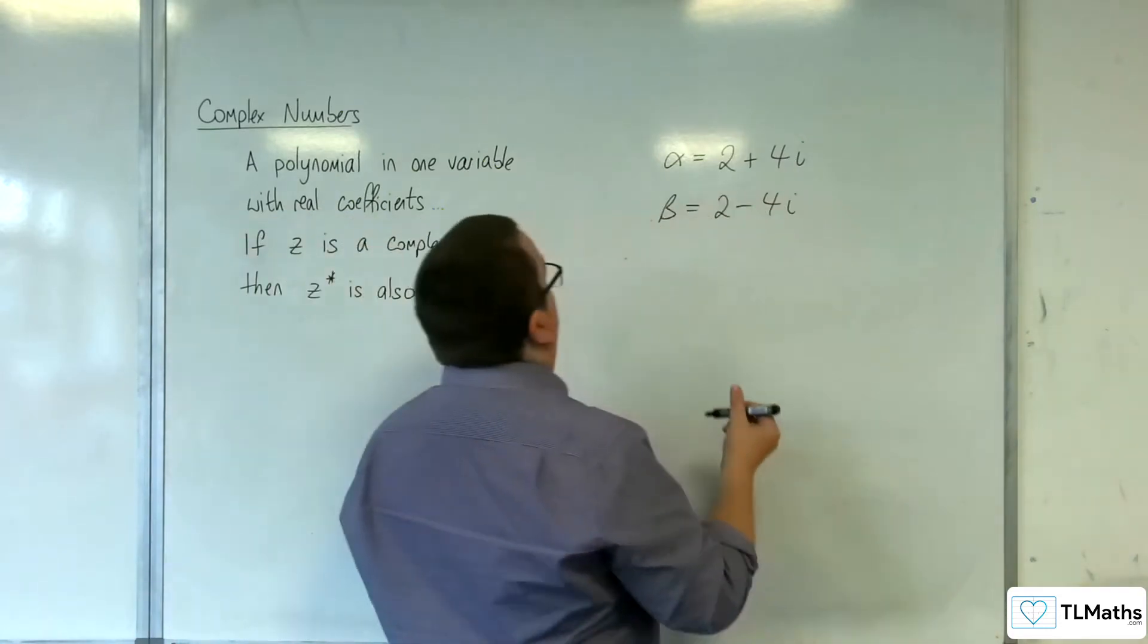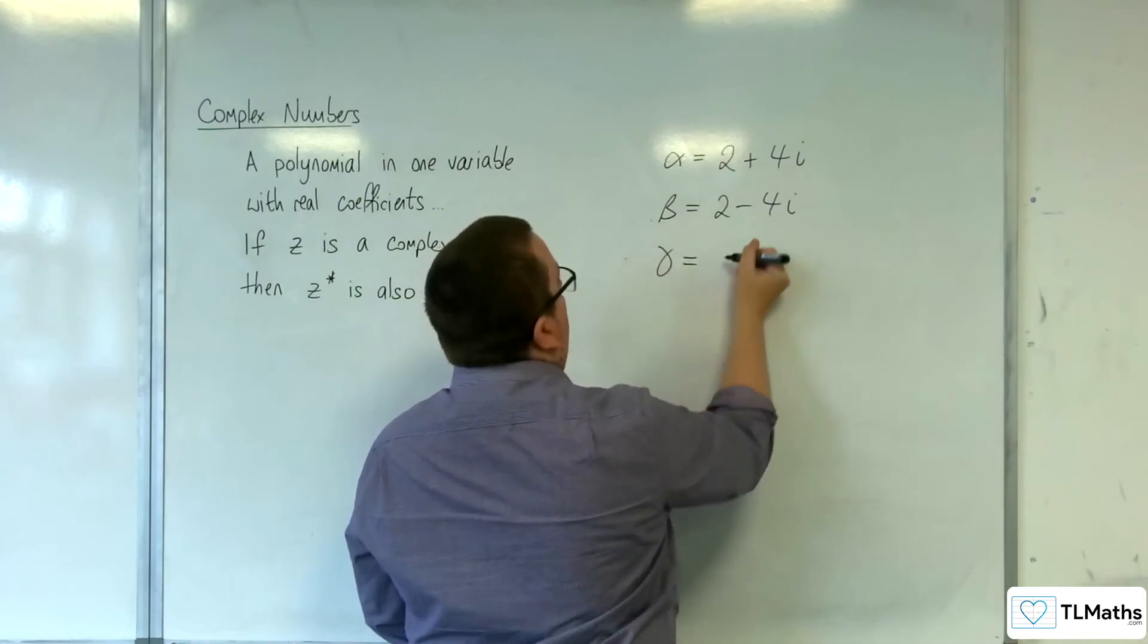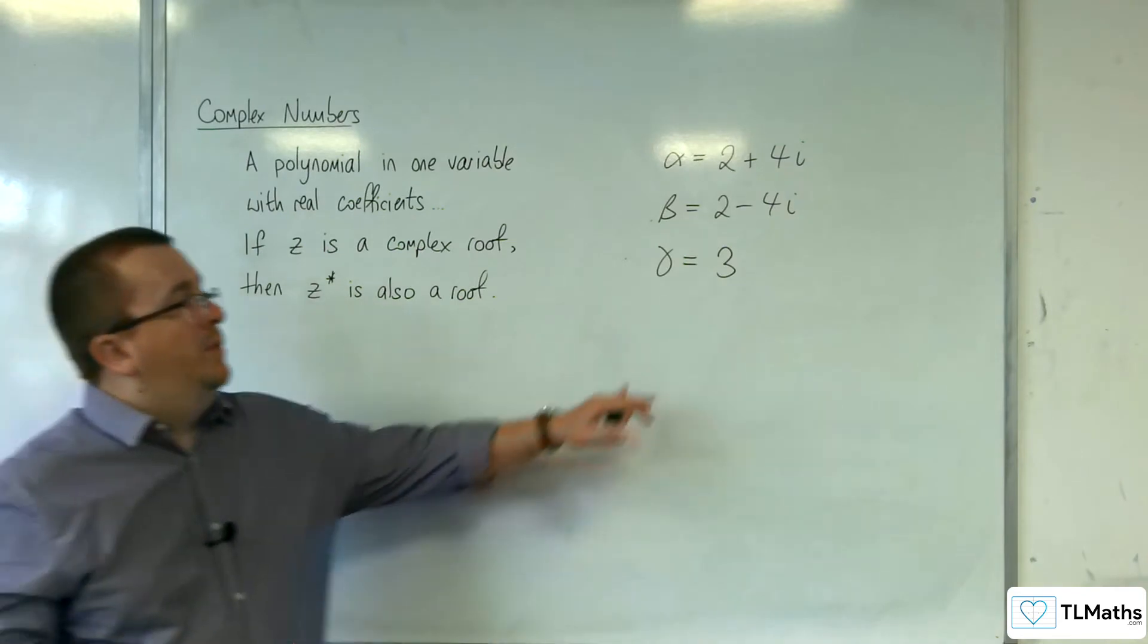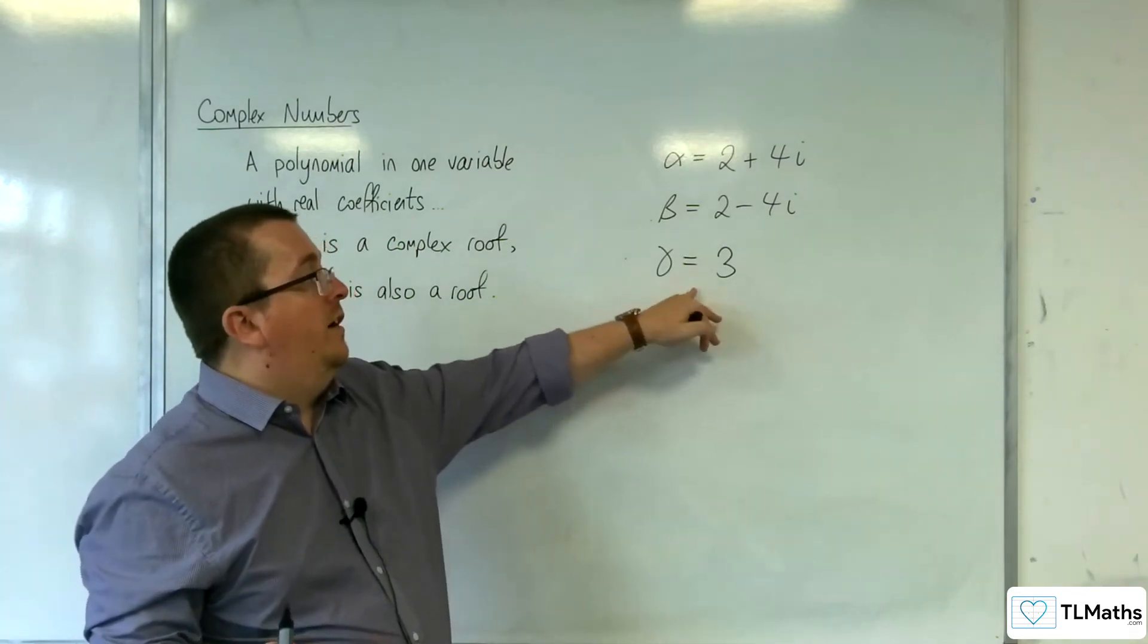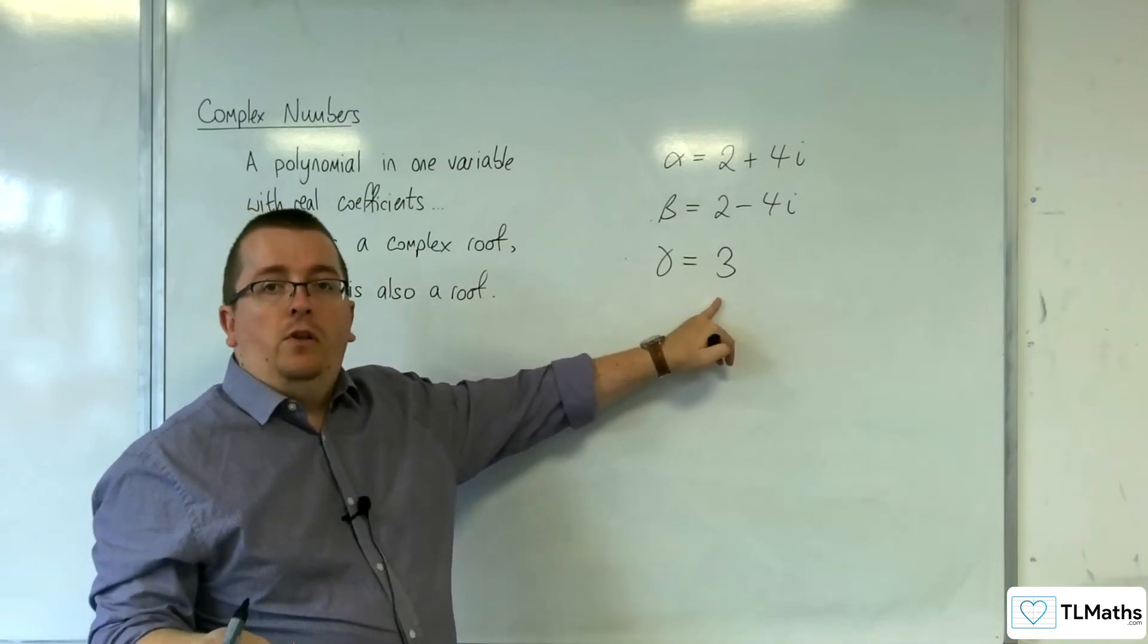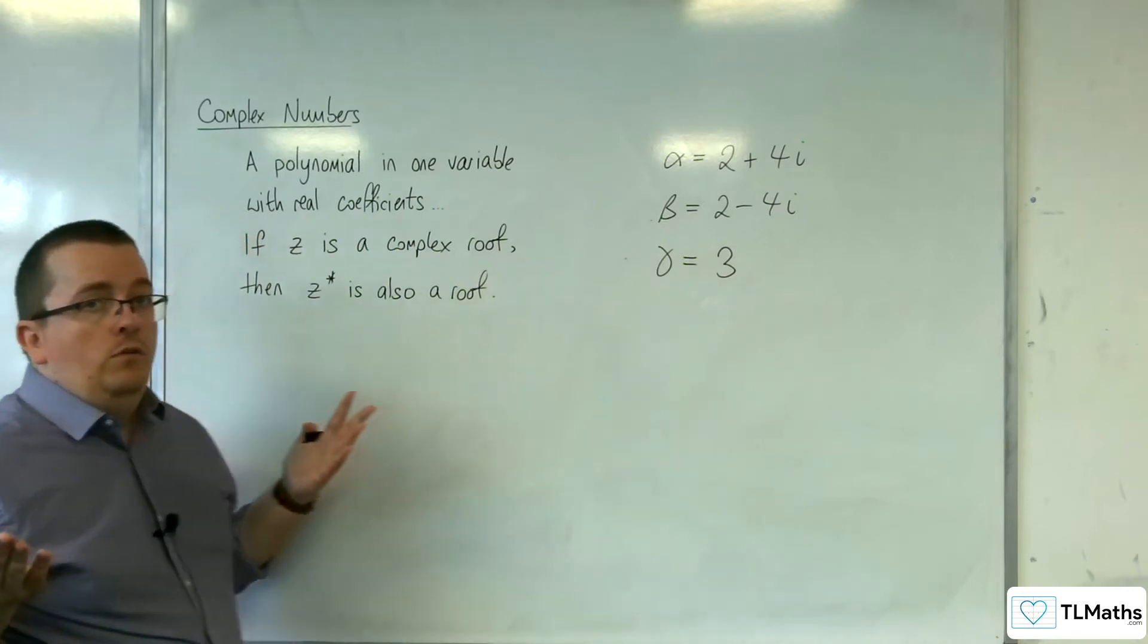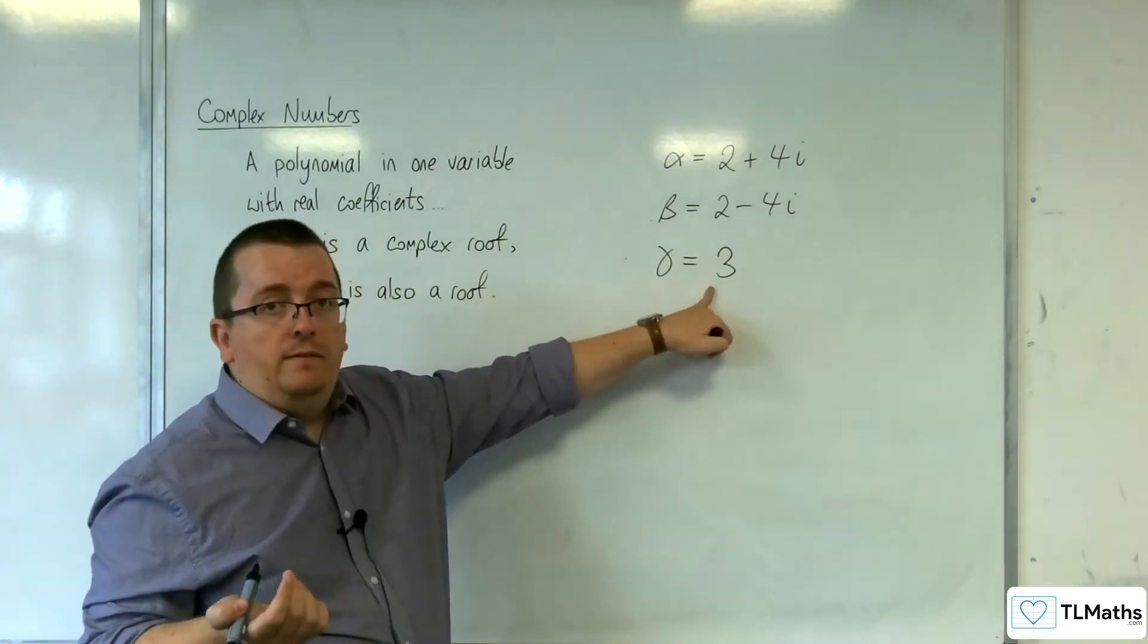Now likewise, it could be that it's a cubic. So let's say gamma equals 3. So it has three roots. But the third root is going to have to be real, because I can't have a third root that is a complex number, because otherwise you don't have the pair to go with that other one.